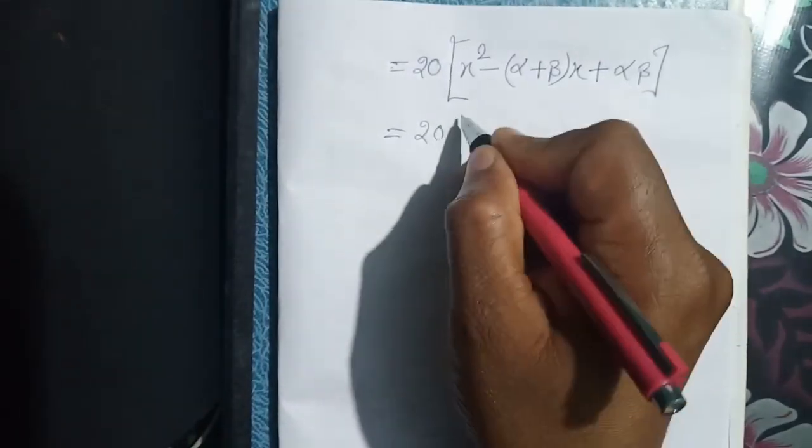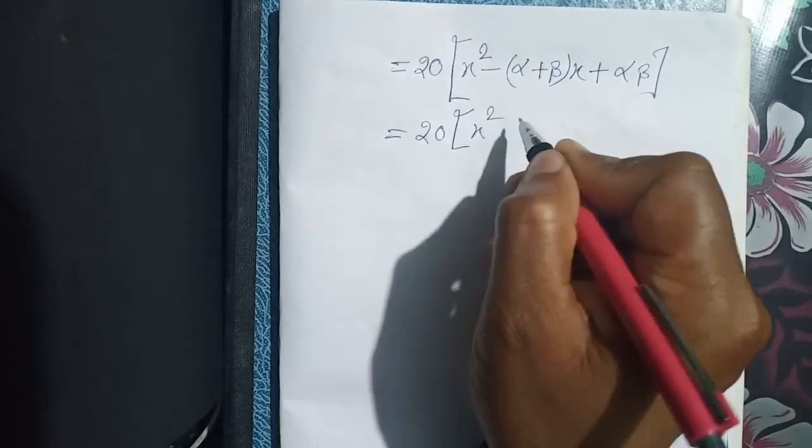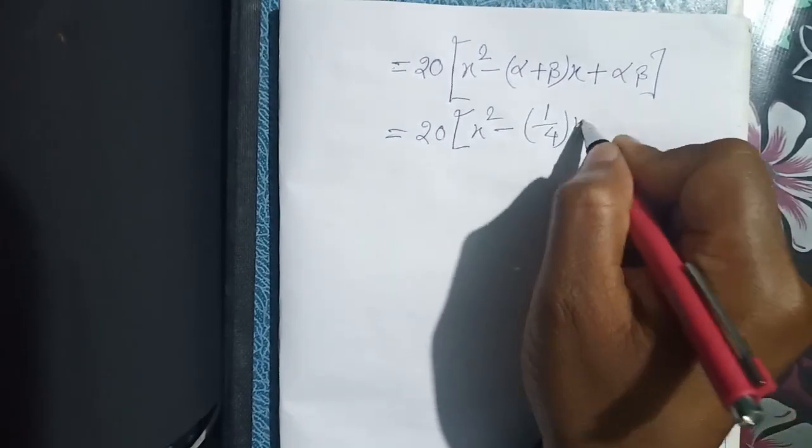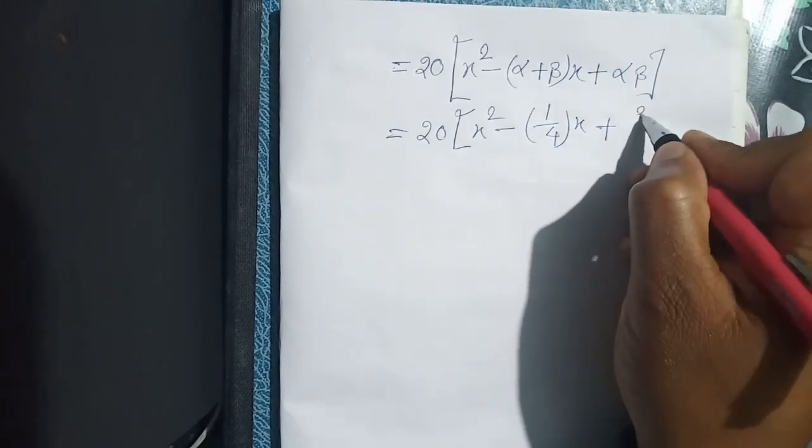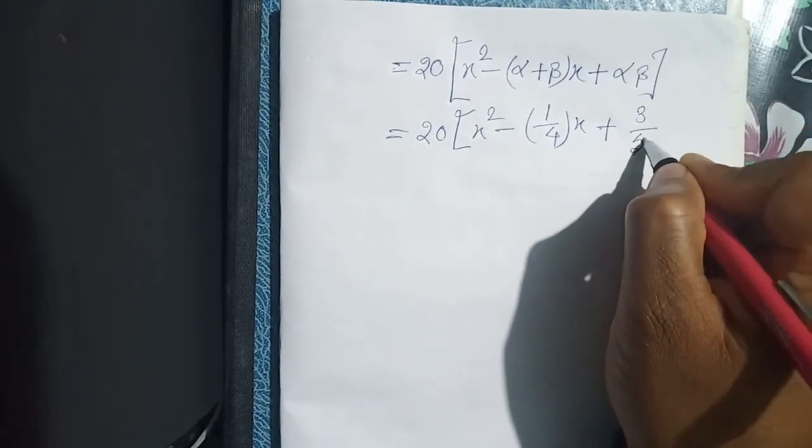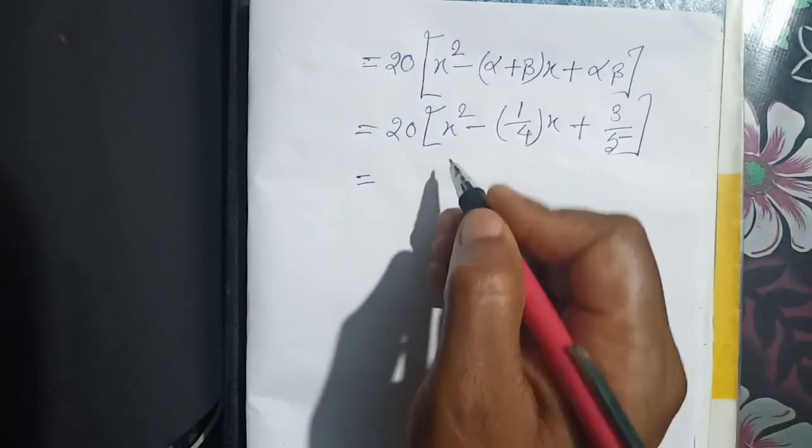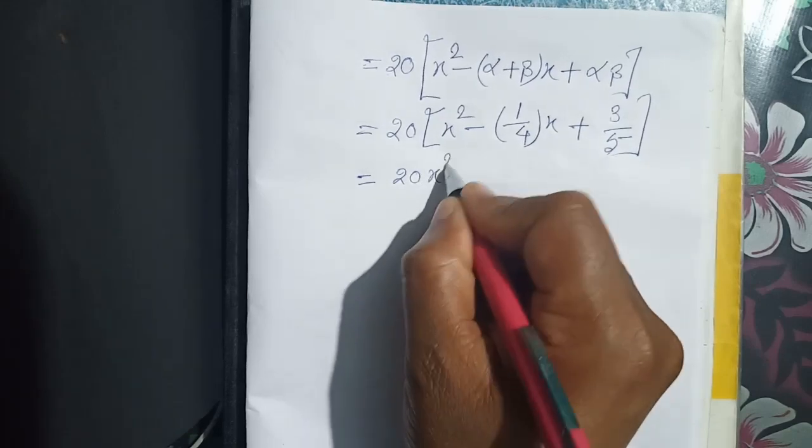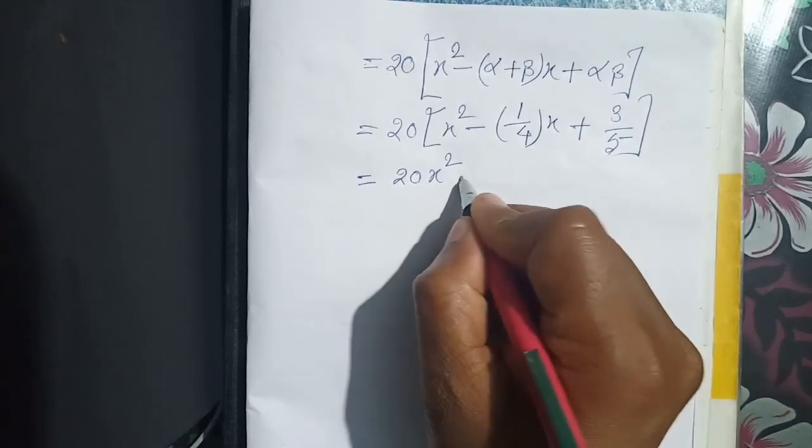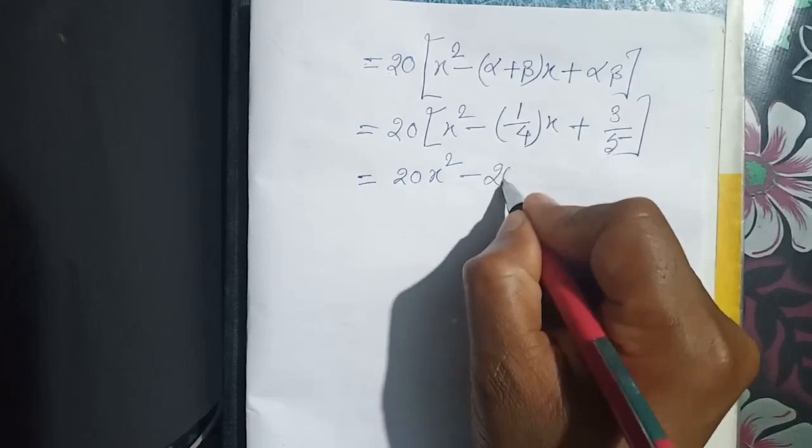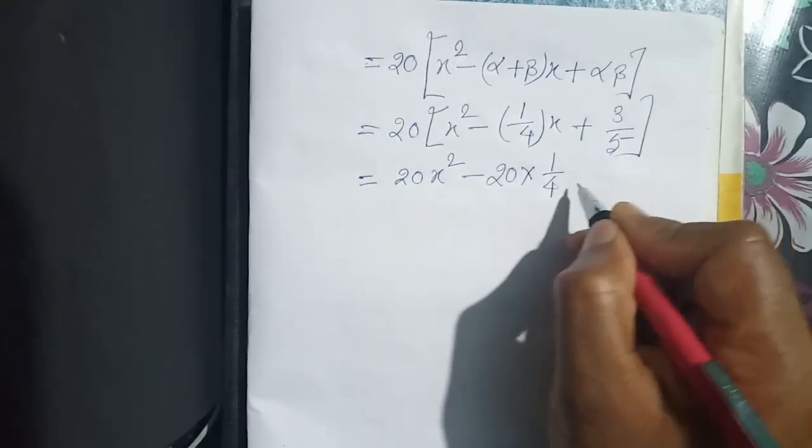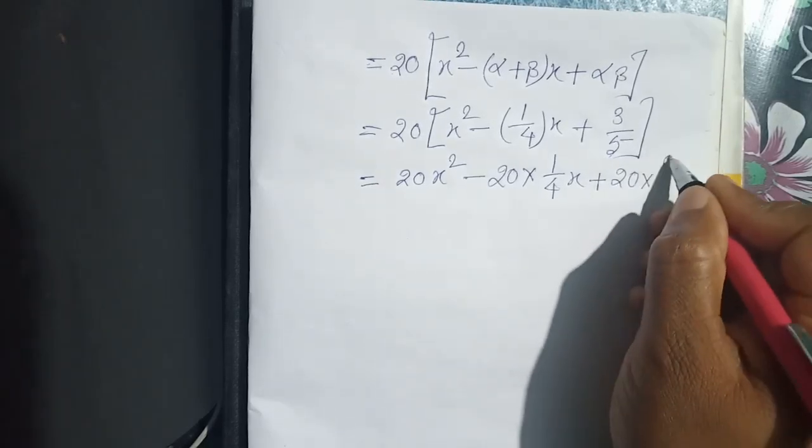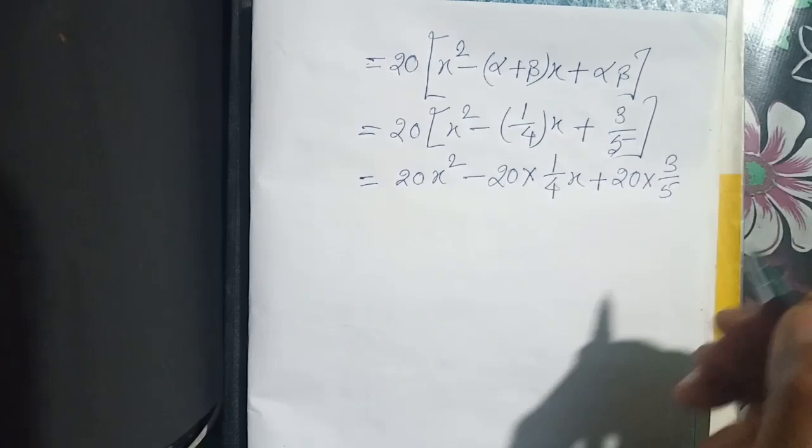Now, 20 x square minus 1 by 4 x plus 3 by 5. So 20 x square minus 20 into 1 by 4 x plus 20 into 3 by 5.